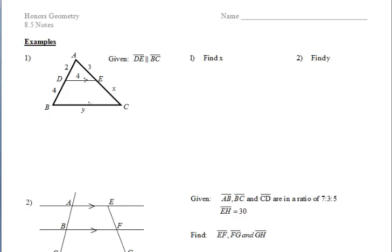Let's start with the first example. We're given that these segments, DE and BC, are parallel, which means that we have a line that's parallel to one side of the triangle and it's intersecting the other two sides of the triangle, which means that we're going to be using the side-splitter theorem. And we know, as a result, that that line is going to divide those two sides proportionally.